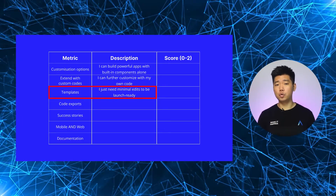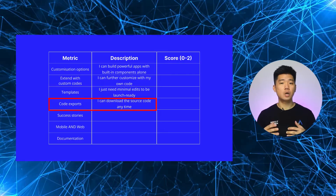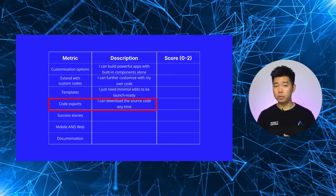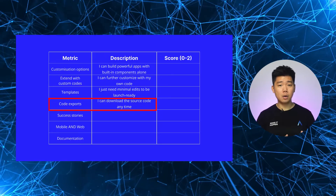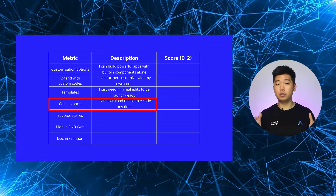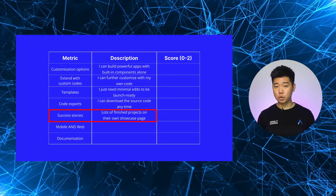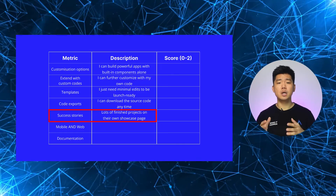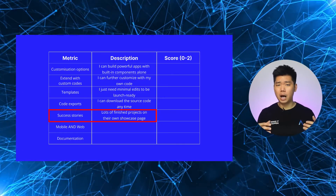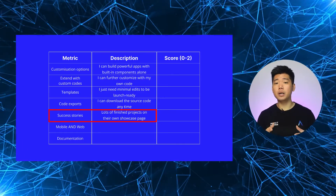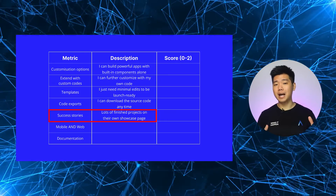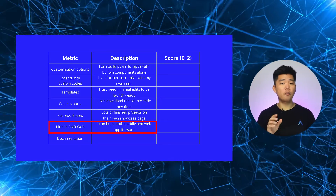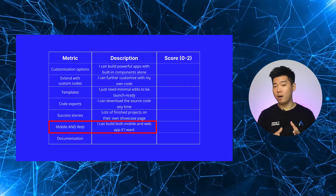Templates: does the platform have a template for my kind of project where I just need to do minimal edits and I'm launch-ready? Code export means how much of my app I own — nothing at all, just the data, or do I get to keep my source code too? Success stories: have other founders or enterprises successfully used the builder, how many, and are they spread across different types or just a few? Mobile and web: can I use one builder for both a mobile and web app?